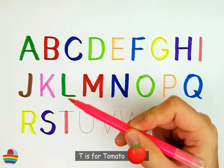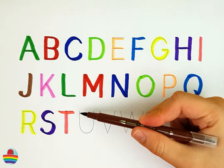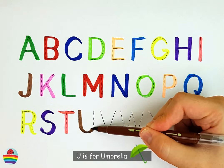T. T is for tomato. T. U. U is for umbrella. U.